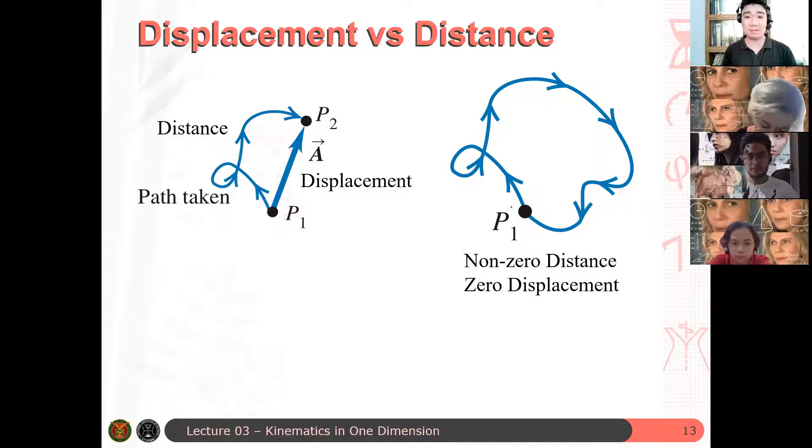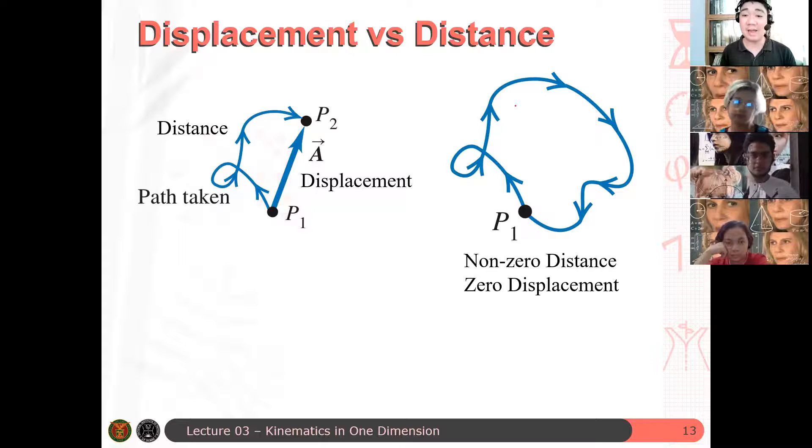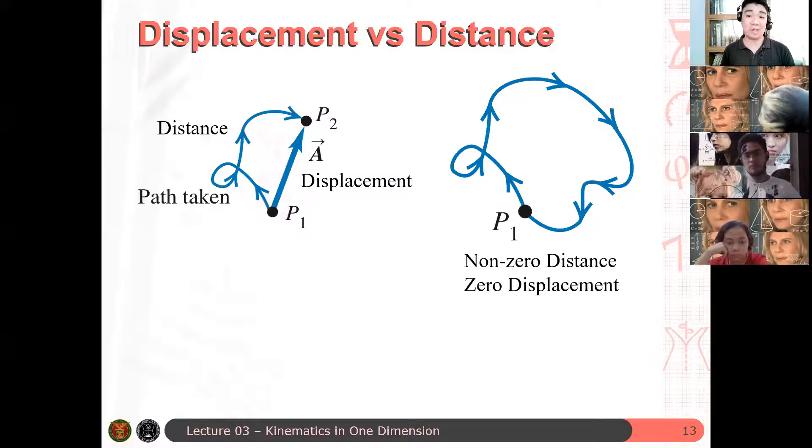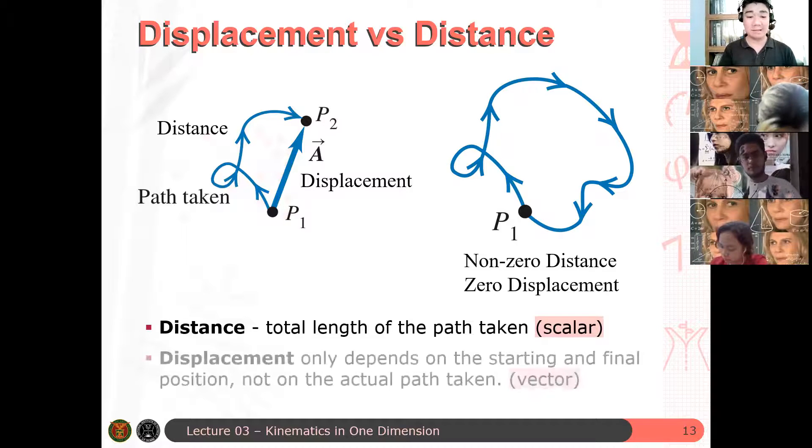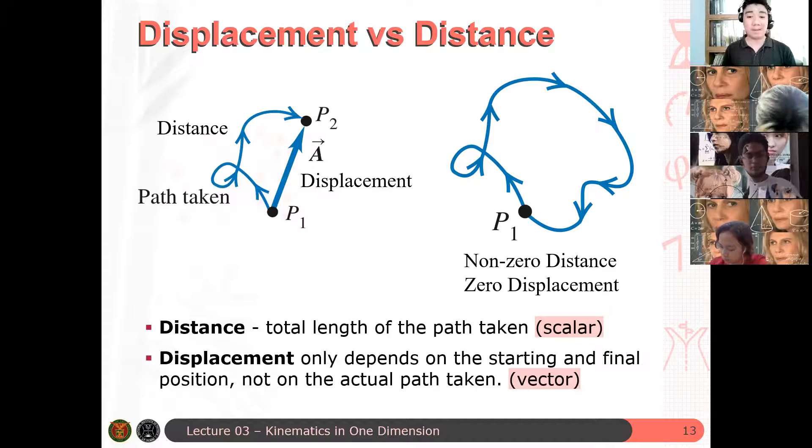Therefore, by definition, since the initial and the final positions are the same, then the displacement vanishes. However, since we know that it already traveled along this curve here, we say that the distance traveled by this point, by this particle, is non-zero. And therefore, we can say that the distance is the total length of the path taken, which is a scalar.